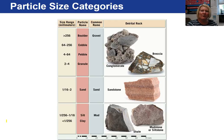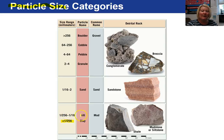Since detrital sedimentary rocks are classified based on particle size, here is a chart showing particle size. If the particle is less than 1/256 of a millimeter, it is clay size. From 1/256 to 1/16 of a millimeter is considered silt size. Collectively, silt and clay are called mud. When this material lithifies into a sedimentary rock, it can be a shale, mudstone, or siltstone.